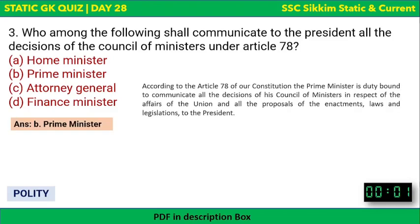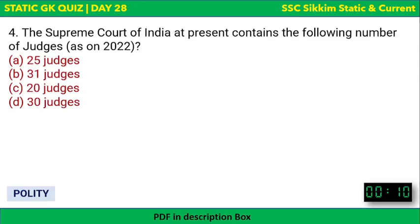According to Article 78 of the Constitution, the Prime Minister is duty-bound to communicate all decisions of the Council of Ministers in respect of the affairs of the Union — including proposals for legislation — to the President.